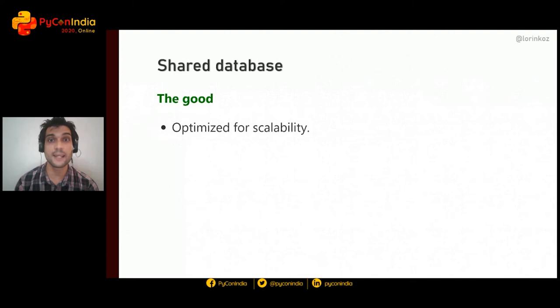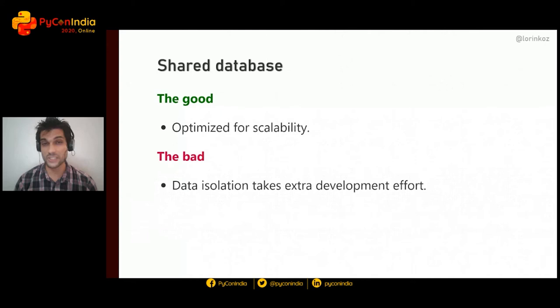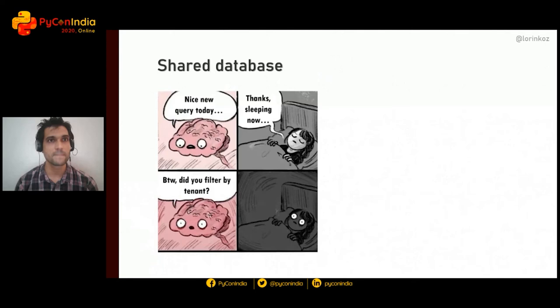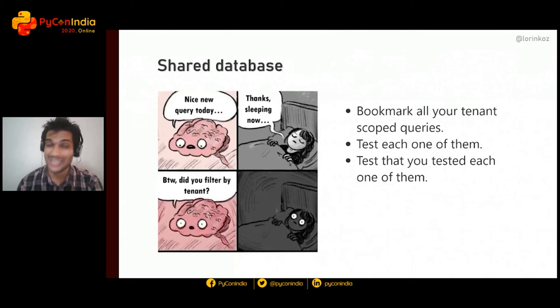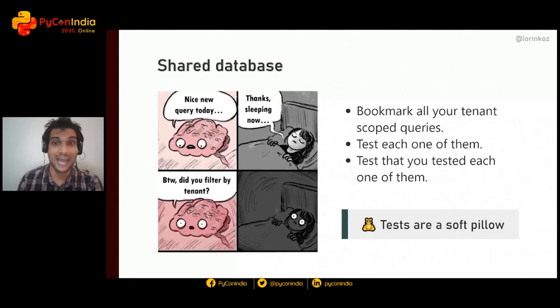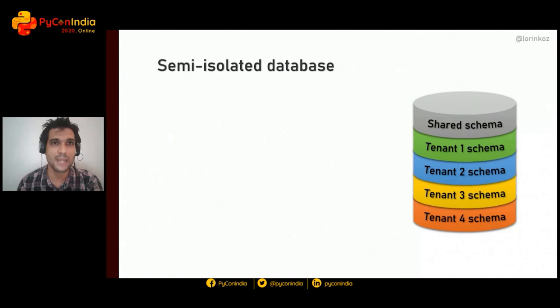The shared database approach is optimized for scalability — adding tenants is just a matter of adding rows to existing tables. The downside is that data isolation takes extra development effort, as it's your responsibility to return only data belonging to the requesting tenant. The biggest risk: it's extremely easy to forget to filter by tenant. My recommendation is to bookmark all tenant-scoped queries, create automated tests for each, and verify that each one is actually tested. Tests are the softest pillow in software development.